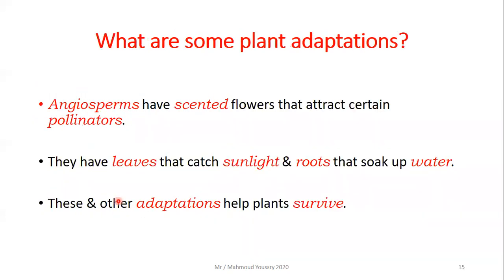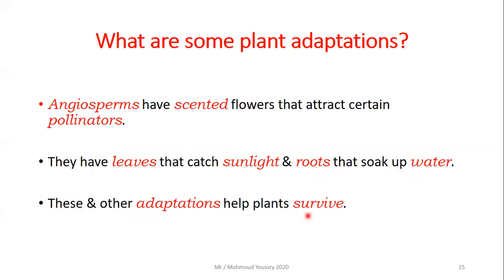Now let's move to plant adaptations. Do you remember the angiosperms - the plants that produce fruits, the flowering plants? Angiosperms have scented flowers that attract certain pollinators in order to transport the pollen grains. They have leaves that catch the sunlight and roots that soak up water. These are adaptations that help plants survive in their environment.